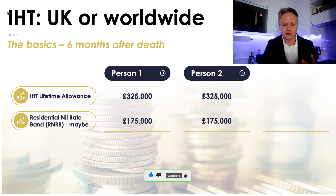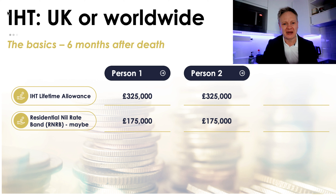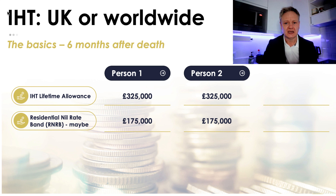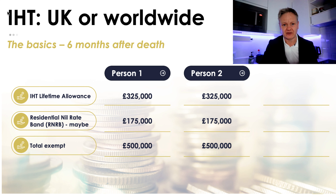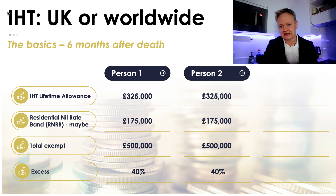You've got two allowances: there's £325,000, which is the basic UK inheritance tax threshold. So if you're a husband and wife, you get two lots — £650,000. You may also get benefits from the residential nil rate band if your property is above that £325,000 threshold, though it is tapered away after certain levels. But there is a potential whereby you each have £500,000, meaning a million for a couple. The excess is then taxed at 40%, which is significant — a huge amount of tax.